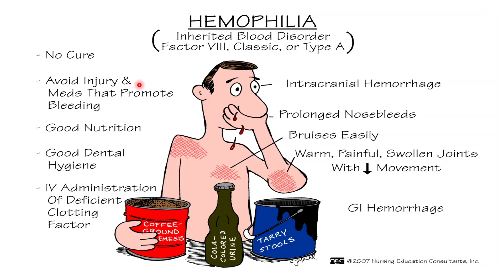This is a pictorial representation of the clinical features present in Haemophilia A. Some of these are intracranial haemorrhage, prolonged nosebleeds, bruises easily, painful swollen joints with decreased movement, and gastrointestinal haemorrhage. There is a pattern in all of these — all are caused by decreased coagulation of the blood.